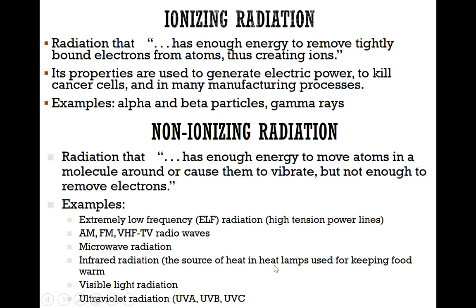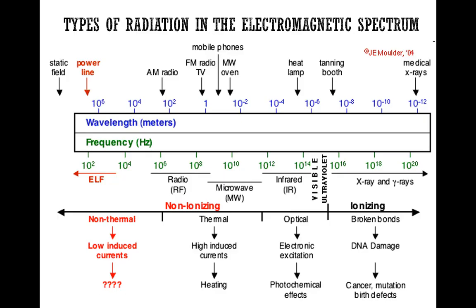In this chart we can see the various ionizing and non-ionizing radiation in the electromagnetic spectrum. It shows the frequency and the wavelength of the various radiation, and they are categorized based on frequency and wavelength. On the right side, where we have high frequency and very small wavelength, we can see ionizing radiation — including x-rays and gamma rays.